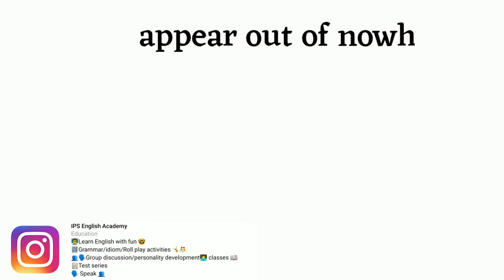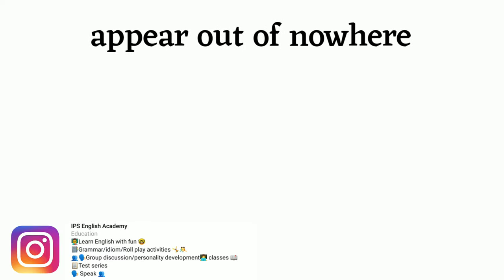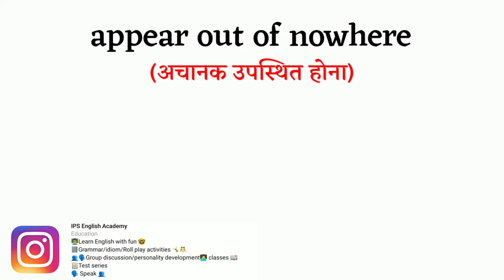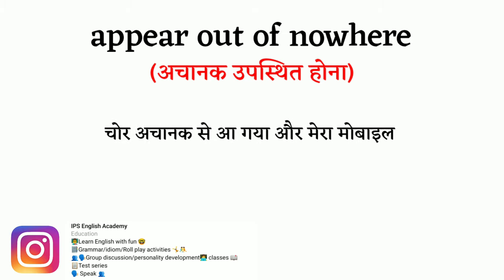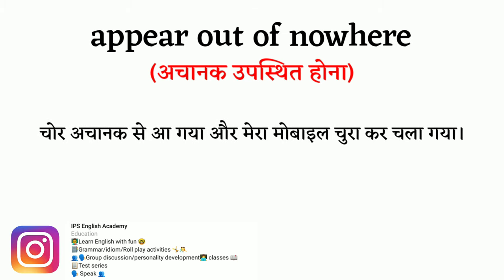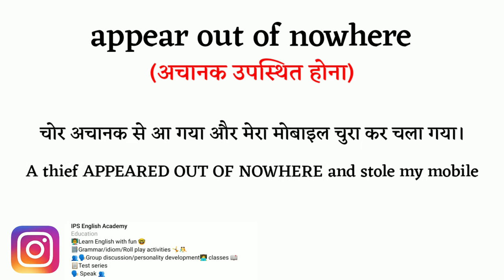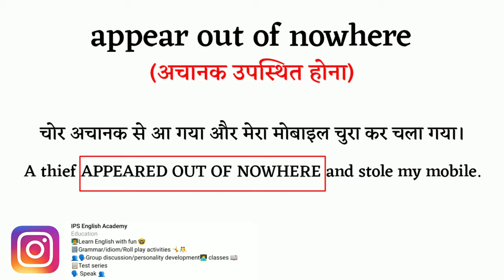The next phrase is 'appear out of nowhere,' which means 'achanak upastit hona' — to suddenly appear without warning. For example: 'Chor achanak se aa gaya, mujhe pata bhi nahi chor kahan se aaya, aur mera mobile chori karke chala gaya.' In English: 'A thief appeared out of nowhere and stole my mobile.'